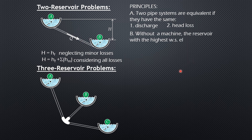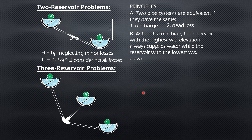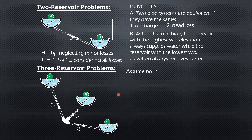Second principle: without a machine, the reservoir with the highest water surface elevation always supplies water, and the one with the lowest water surface elevation always receives water. So in a three-reservoir problem, reservoir A always supplies — flow direction is towards the junction — and reservoir C, the lowest, always receives — flow direction is always towards that lowest reservoir. The second reservoir must be investigated to determine if its flow direction is inflow or outflow.